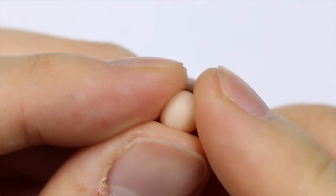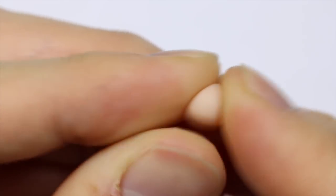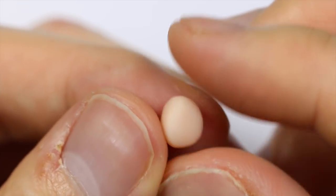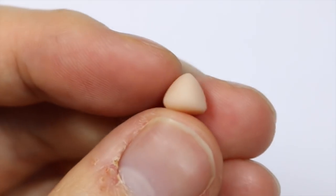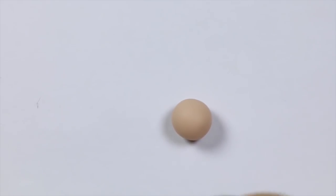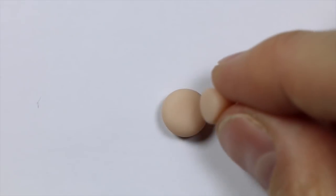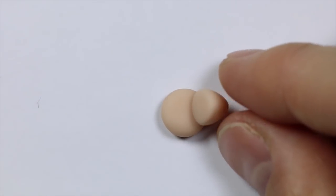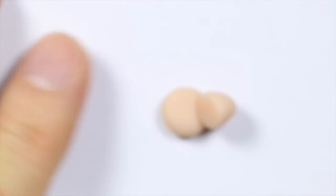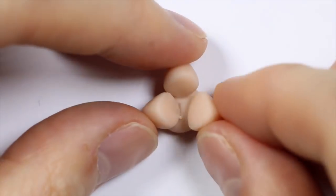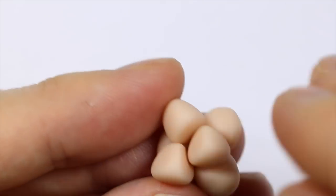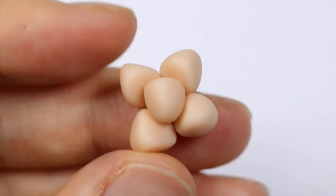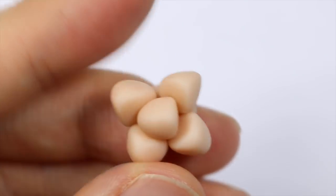So for the second type of succulent, you want to take some scrap clay and you want to pinch it into a 3D triangle shape. And you want to make about five of these guys. So I'm placing about four on the outer layer of the base and blending that onto it. And I'm going to place one in the middle, and there's your second type of succulent. This one's a super easy one.